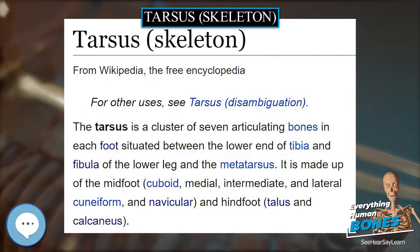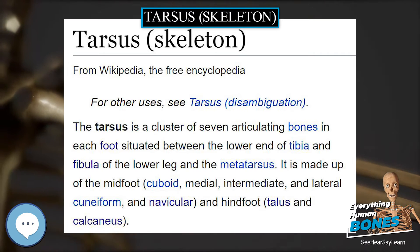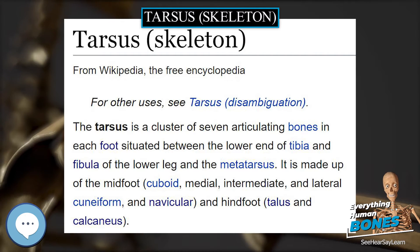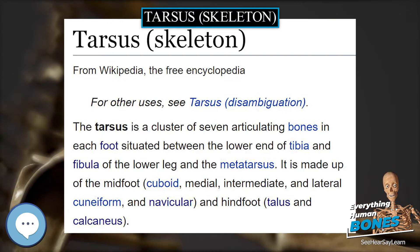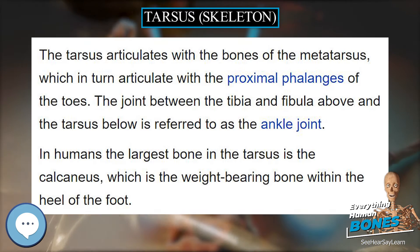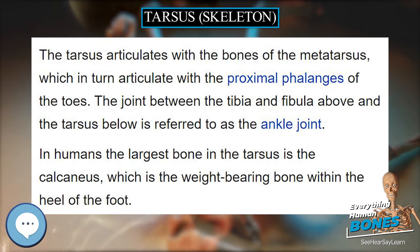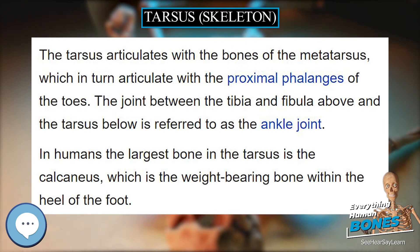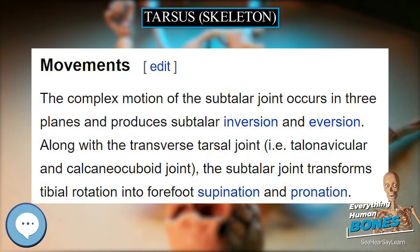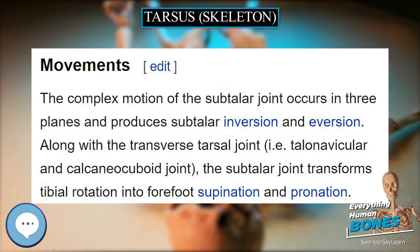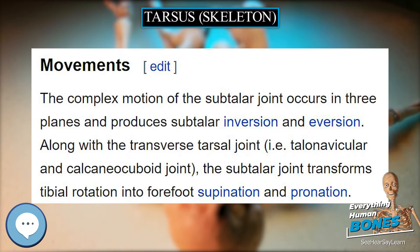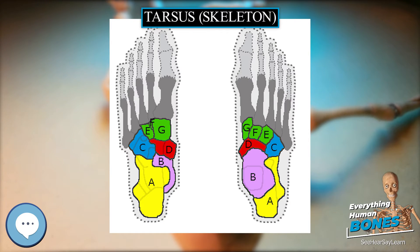The heel strikes the ground in slight inversion, followed by quick eversion. The talonavicular and calcaneocuboid joints — i.e., between the talus and navicular bones, and the calcaneus and cuboid bones — form the so-called transverse tarsal joint, or Chopart's joint.